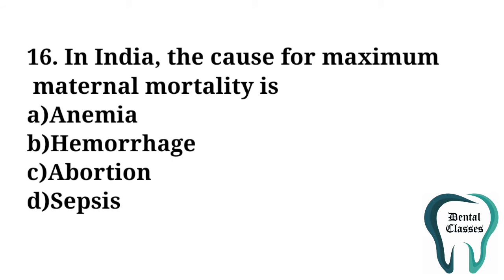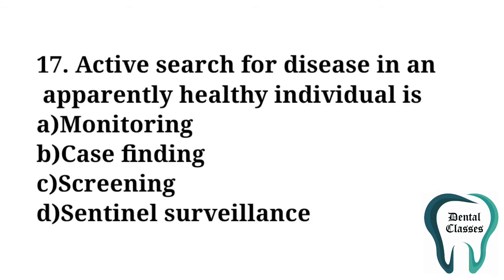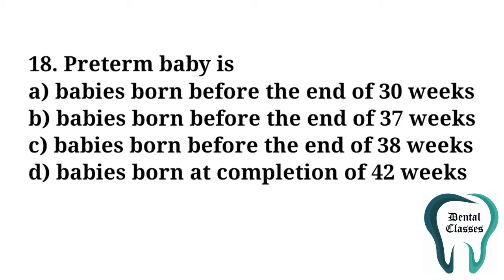In India, the cause for maximum maternal mortality is — the answer is B — hemorrhage. Active search for disease in an apparently healthy individual is called screening, so the answer is C. Preterm baby is the baby born before the end of 37 weeks, so the answer is B.